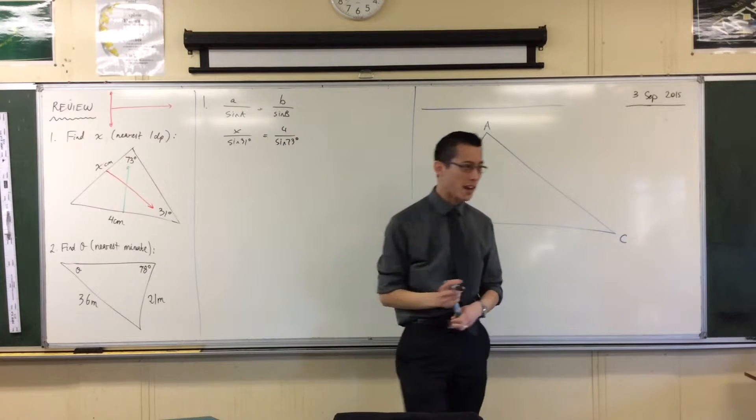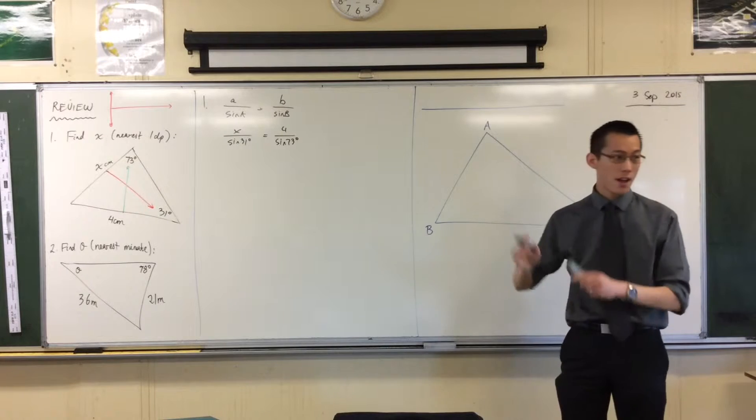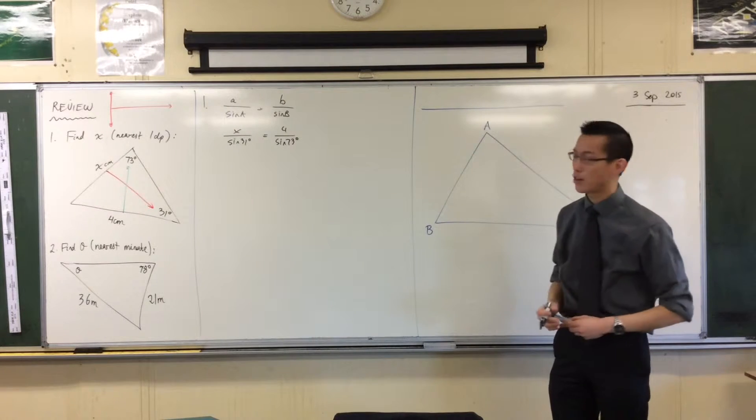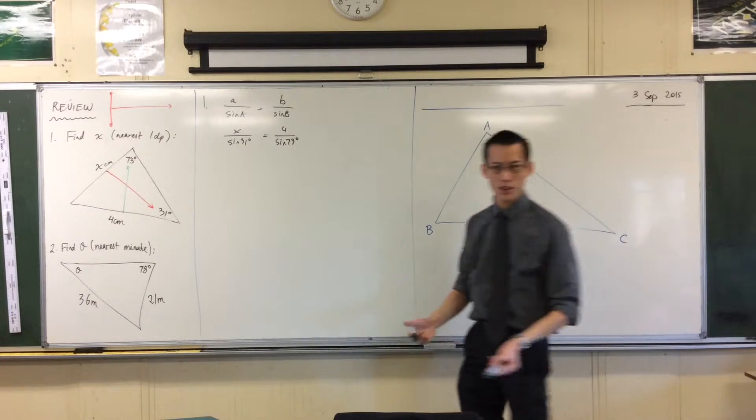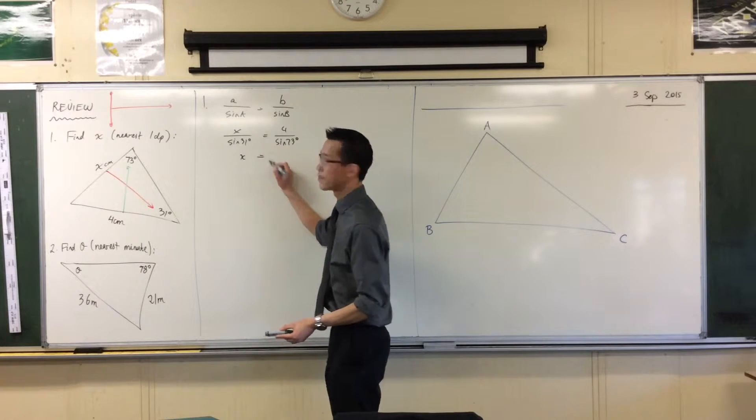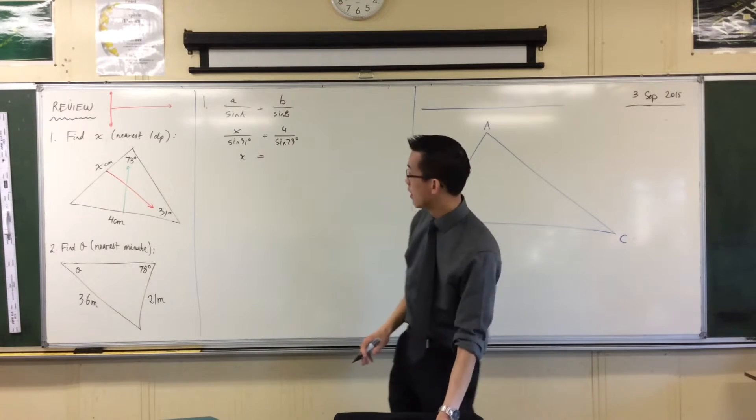And from here, it's pretty straightforward really. You're going to rearrange, put that sine 31 on the right hand side. Then you're going to go to your calculator. So what are we getting for our actual, can someone give me to one decimal place?